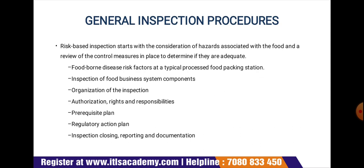Next, let's talk about the general inspection procedure. The risk-based inspection starts with consideration of the hazards associated with the food and a review of the control measures in place to determine if they are adequate. This includes checking foodborne disease risk factors at a typical processed food packaging station: incoming raw material contaminated with pest residue or pathogenic contamination; contaminated wash water; poor design of facilities such as toilets opening into packing areas; packaging stations open to dust or presence of pests or other animals; sick employees or lack of personal hygiene or improper washing; dirty boxes or crates; and recontamination during transportation to market.